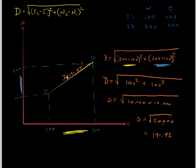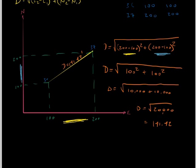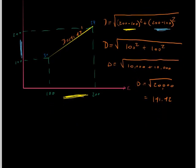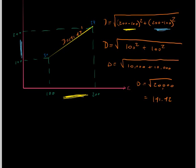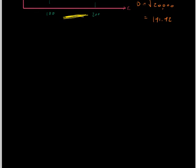So for any two coordinates, you can solve for the distance by using this distance formula. Pretty easy. Let's do one more example that's a little bit tougher — some numbers that aren't so easy to work with.